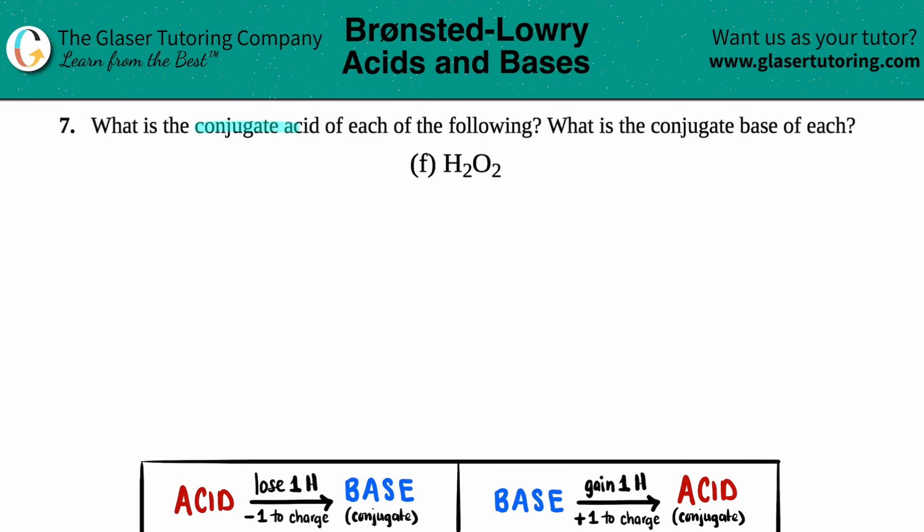Number seven, what is the conjugate acid of each of the following and what is the conjugate base of each? And then we have letter F out of the bunch. So in this case, we just have to figure out what's the conjugate acid and conjugate base of H2O2, which is hydrogen peroxide.